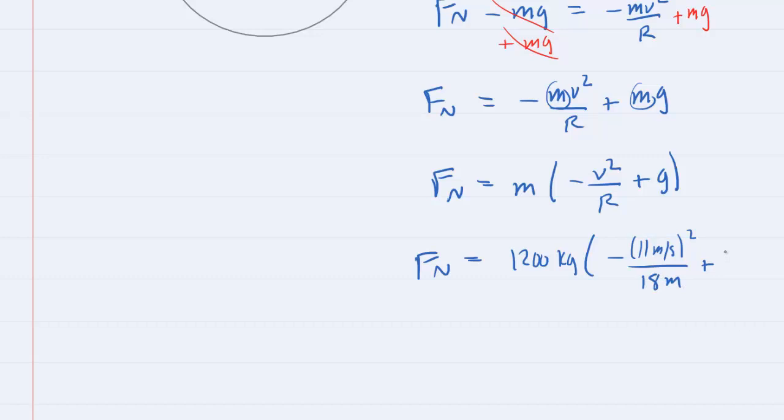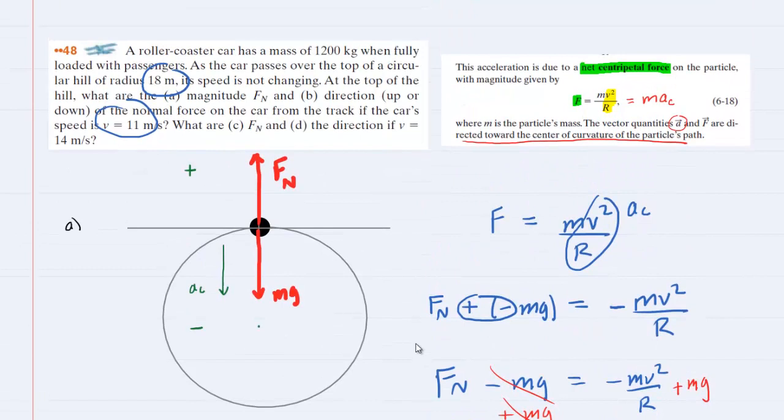And then to that we will add g, which is 9.8 meters per second squared. Let's pick up our calculators and process this calculation. And when we do so, we can see the normal force comes out to approximately 3693 newtons. So this would be the correct answer for the magnitude of the normal force.